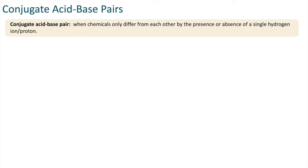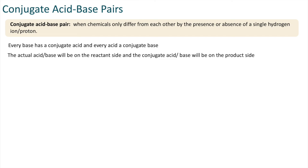Every base has a conjugate acid and every acid will have a conjugate base. The actual acid or base will be on the reactant side of the chemical equation and the conjugate acid or base will be on the product side.